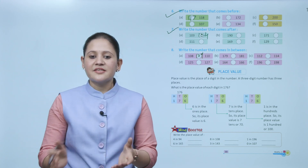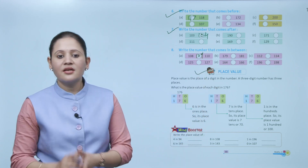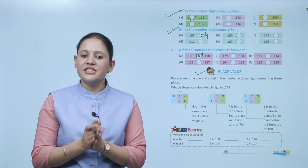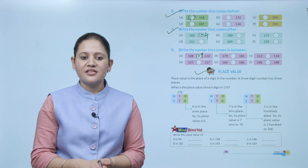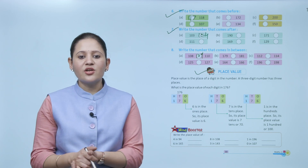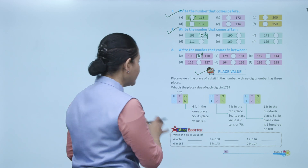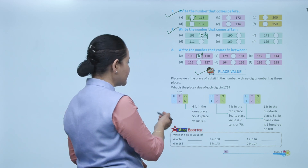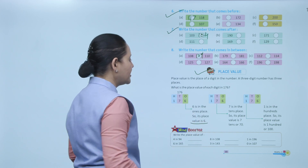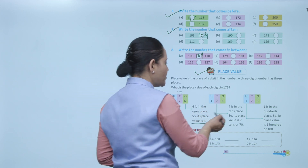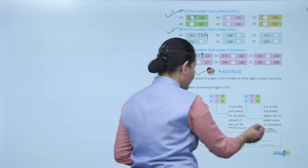Next: place value. Place value is the place of a digit in a number. A three-digit number has three places. What is the place value of each digit in 176? Six is at the ones position, so its place value is 6. Seven is at the tens position, so its place value is 70. One is at the hundreds position, so its place value is 100.